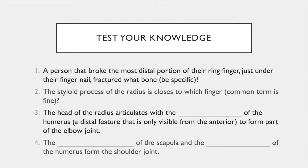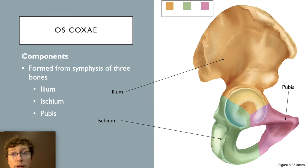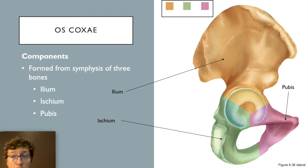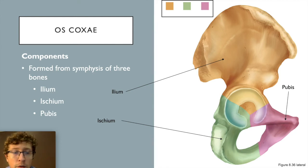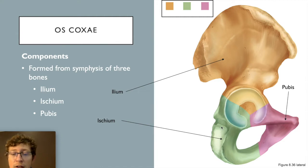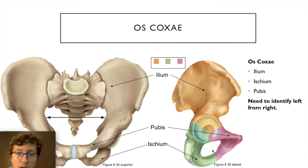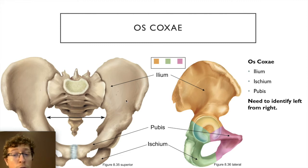Now looking at the inferior portion of the appendicular skeleton, starting with the pelvic girdle. A single os coxa is one of two hip bones, made of three fused bones: the ilium, the pubis, and the ischium. The full pelvis consists of the two os coxae plus the sacrum and coccyx, which are part of the axial skeleton.